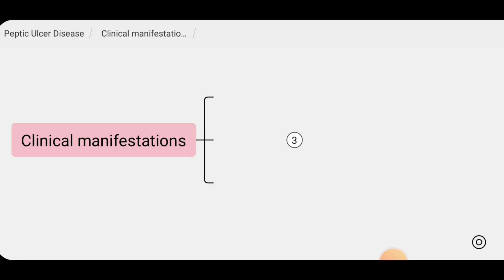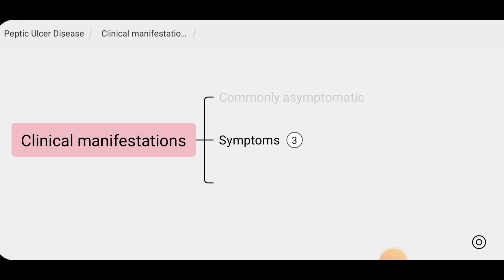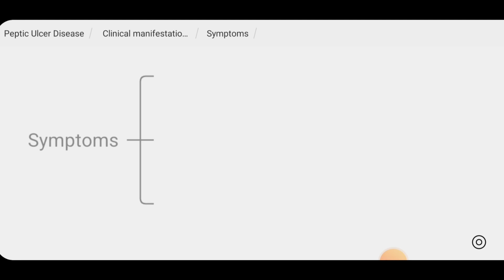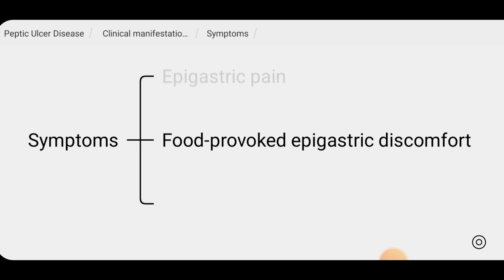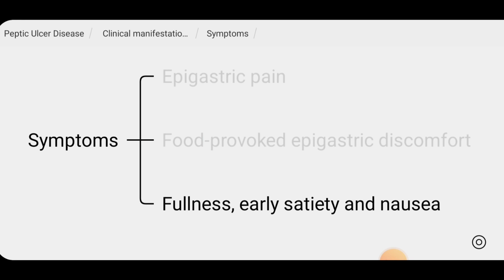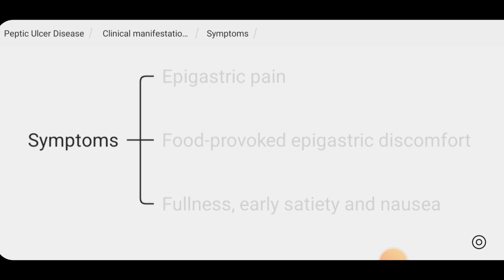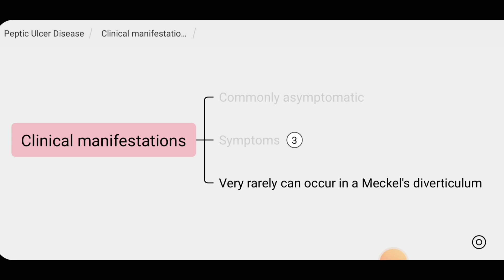Peptic ulcers are commonly asymptomatic. However, symptomatic peptic ulcers usually present with epigastric pain, food-provoked epigastric discomfort and fullness, early satiety, and nausea. Very rarely, peptic ulcers can occur in a Meckel's diverticulum.